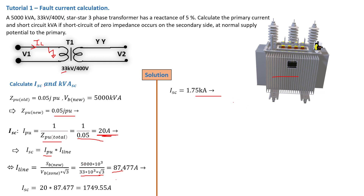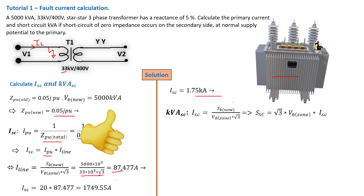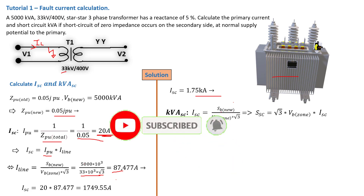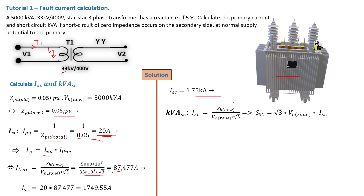Next, we calculate the short circuit KVA. Note that this is not the normal KVA — the transformer's rated power is 5,000 KVA. We need the short circuit KVA, which should be larger than the normal KVA. The formula is: I_sc = S_sc / (V_B_zone × √3). Rearranging, S_sc replaces S_B_new in the line current formula.